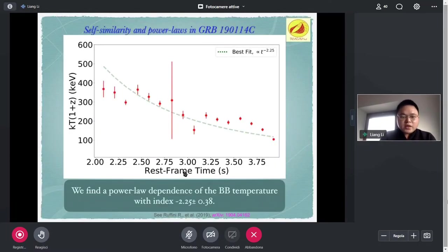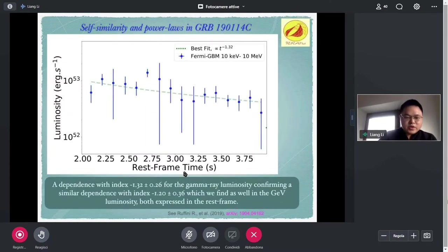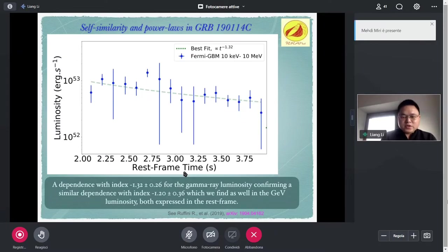We find a power-law behavior of the temperature for our UPE phase. Similar, we also find a power-law behavior, power-law decay for luminosity, for gamma-ray luminosity from our UPE phase. This is confirmed from as well, conformed from the GeV emission, with a power index minus 1.3, around.